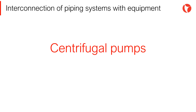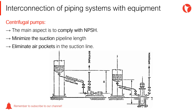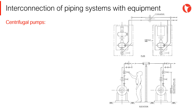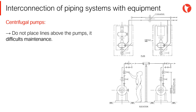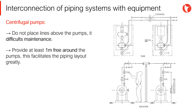Along with compressors and fractionating towers, centrifugal pumps are one of the most difficult equipment to develop a piping arrangement for. With regards to centrifugal pump intake connecting piping, it is essential to ensure the pump suction — in other words, comply with the required NPSH. The length of the suction pipe should be minimized as much as possible to avoid cavitation. Do not place lines above the pumps, as it makes maintenance activities difficult. At the same time, provide at least one meter free around the pumps, which facilitates the piping arrangement greatly.